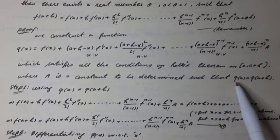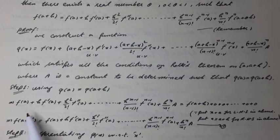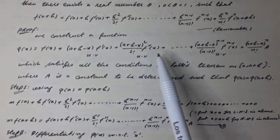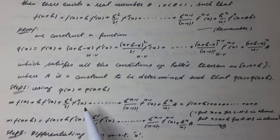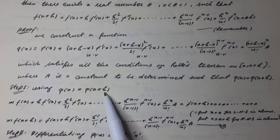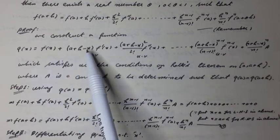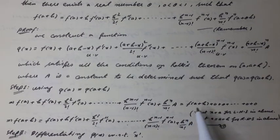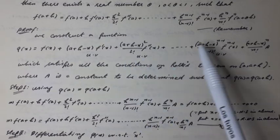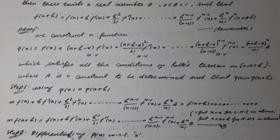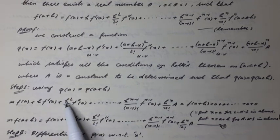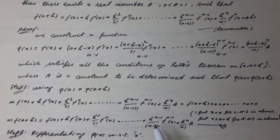Step 1: Using the condition φ(a) = φ(a+h), we put x = a to obtain φ(a), and x = a+h to obtain φ(a+h). When x = a+h, the terms with (a+h−x) vanish, giving φ(a+h) = f(a+h). Equating, we get: f(a+h) = f(a) + h·f'(a) + h²/2!·f''(a) + ... + h^(n-1)/(n-1)!·f^(n-1)(a) + h^n/n!·A. This is Equation 1.